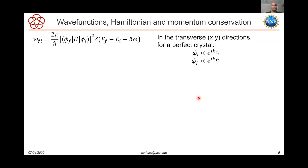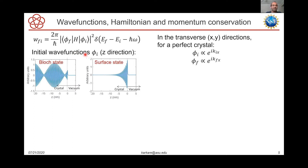Looking at what these initial states, final states, and Hamiltonian look like: in the transverse directions — parallel to the surface — for a perfect crystal, the initial and final states are essentially proportional to e^(ikx), where k is the transverse wave number or transverse momentum. This is true for a perfect crystal without non-uniformities; you can describe these wave functions as plane waves in the transverse directions. The longitudinal part of the wave function is much more interesting.